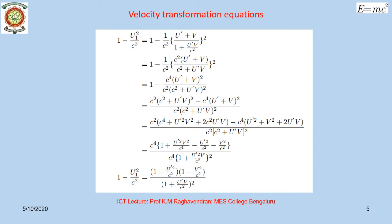This is a purely mathematical step. Consider the term 1 − U1²/C². When we substitute for the value of U1 as (U' + V)/(1 + U'V/C²) and go through a series of simplifications, we obtain: 1 − U1²/C² = [(1 − U'²/C²)(1 − V²/C²)] / (1 + U'V/C²)².